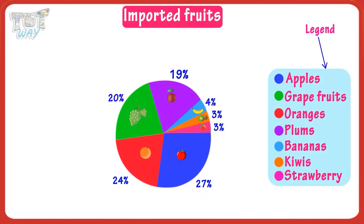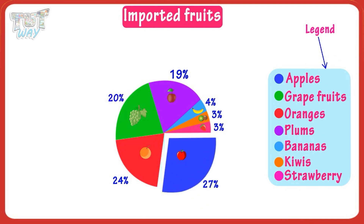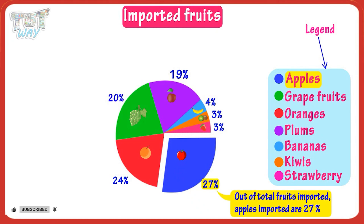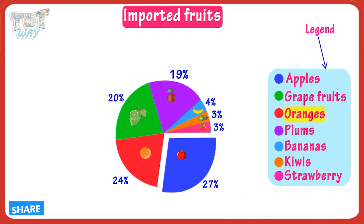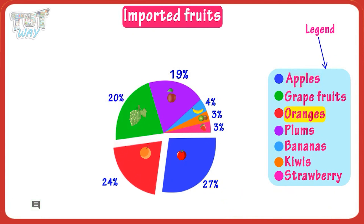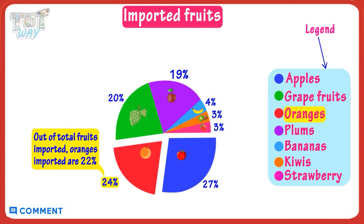Here we have a pie chart. The title says it is about imported fruits. According to the labels, this portion shows the percentage of apples imported out of total fruits imported. The percentage of apples imported out of total fruits imported is twenty-seven percent. The percentage of oranges imported out of total fruits imported is twenty-four percent.